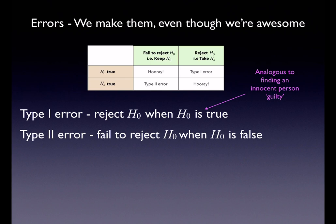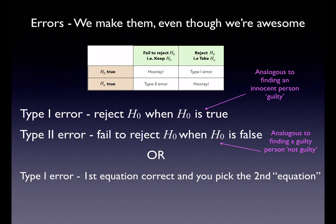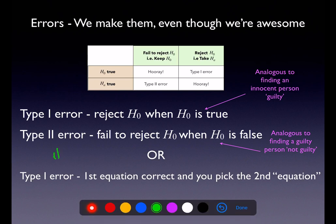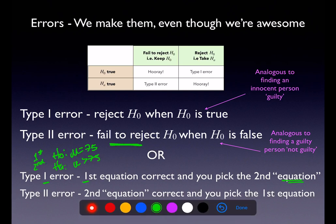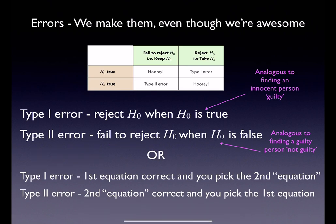A type one error is analogous to finding an innocent person guilty, and a type two error is analogous to finding a guilty person not guilty. When I was learning about this, I thought of a type one error as: the first equation — the null, like mu equals 75 — was true, and I mistakenly chose the second. A type two error means the second equation — the alternate, like mu greater than 75 — was true, and I mistakenly picked the first. The proper terminology is still 'fail to reject versus reject,' but this mnemonic helped me learn which error meant what.